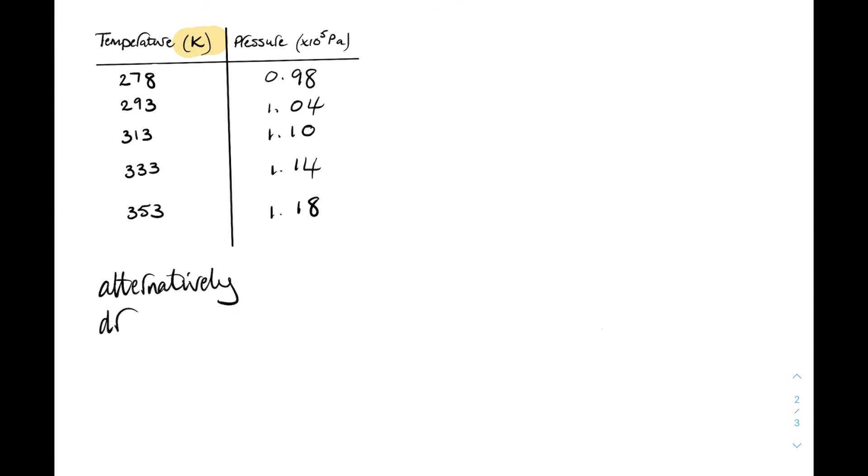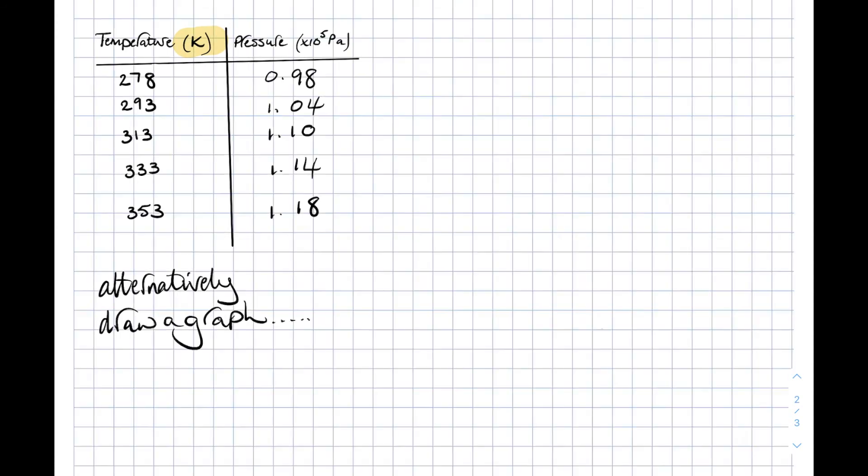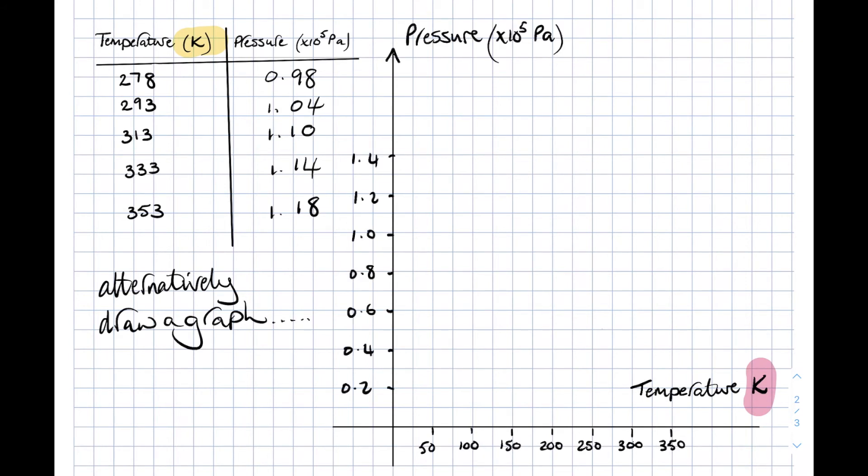And as usual, there's always an alternative way of deriving that same relationship. And that is to draw a graph. So we're going to have our temperature along the bottom in Kelvin, our pressure on the y-axis. And we're going to plot a graph of our results.